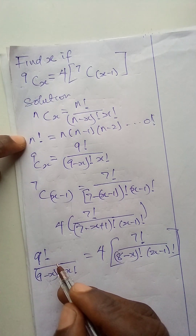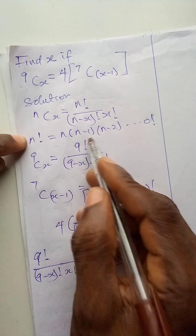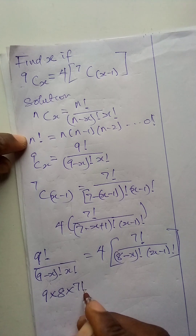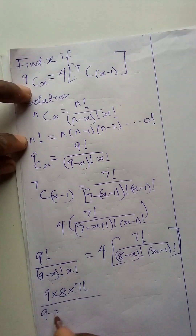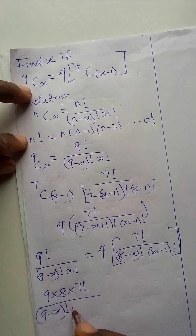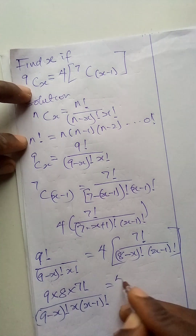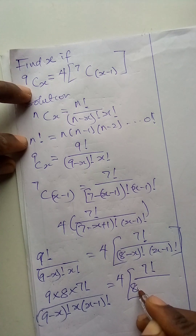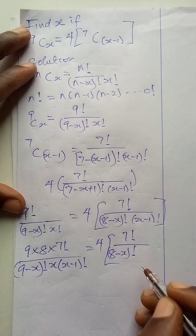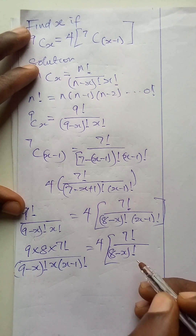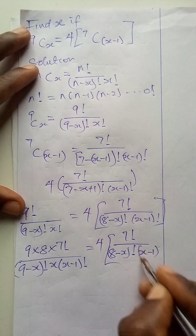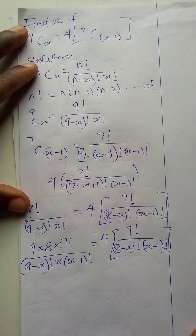Now let us apply the factorial expansion. n factorial is n times n minus 1 times n minus 2. So this becomes 9 times 8 times 7 factorial over 9 minus x factorial, and x times x minus 1 factorial, equal to 4 bracket 7 factorial over 8 minus x, multiplied by x minus 1 factorial.